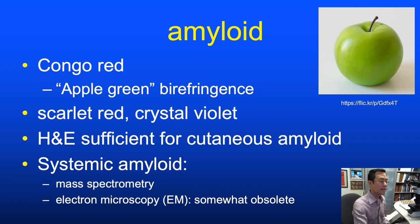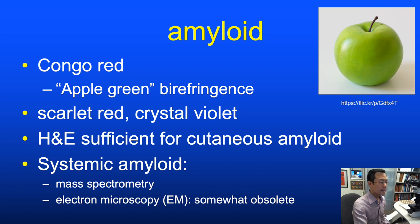Congo red is the main stain we use for amyloid, and the buzz phrase is 'apple green.' Under polarized light, the positive stain will have an apple green appearance. For cutaneous amyloid—macular amyloid, lichen amyloid—H&E is usually sufficient and I typically make the call on H&E without ordering a Congo red stain.